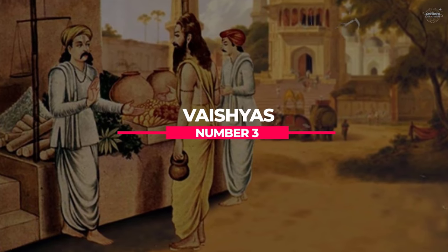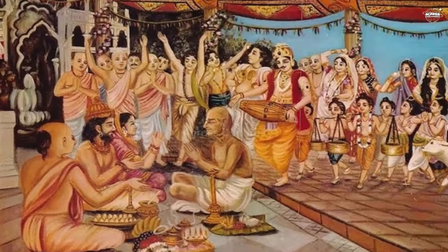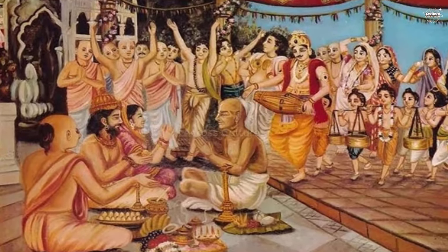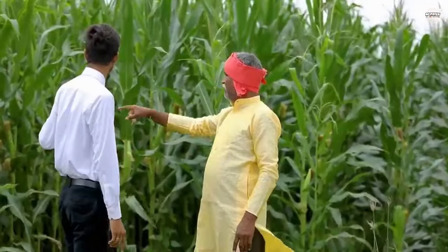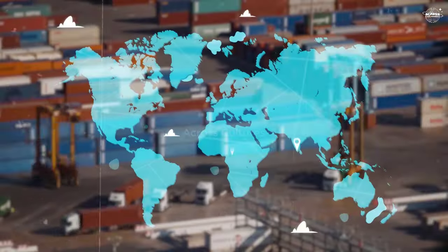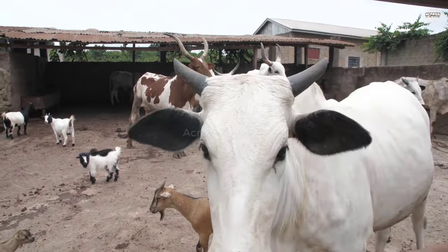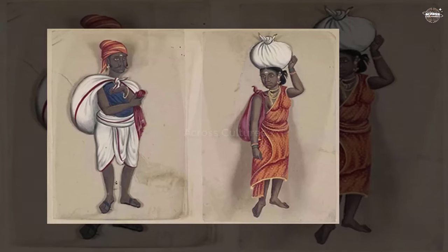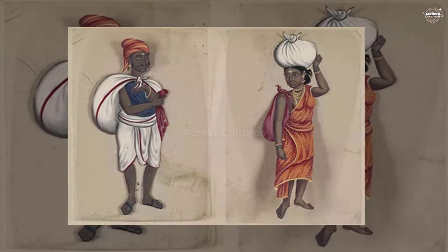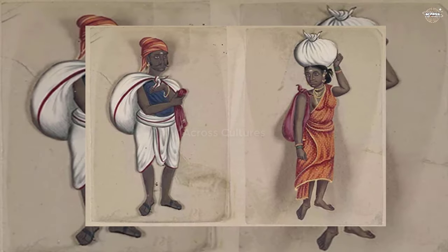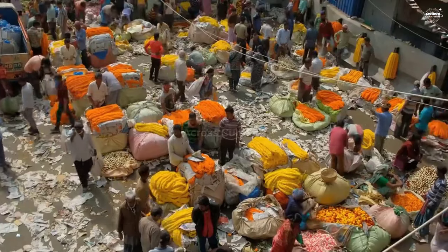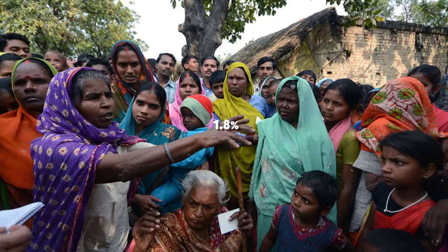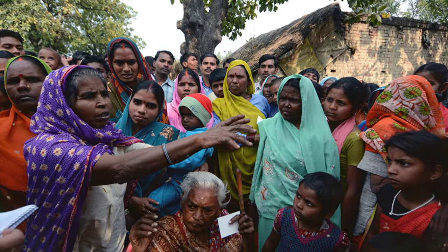Number 3: Vaishyas. At number 3, we have Vaishyas, created from the thighs of the Lord, and were the agriculturalists, merchants, traders, moneylenders, and those involved in commerce. Cattle-rearing was considered one of the key roles Vaishyas had to play. Some of them also used to work in close coordination with kings' administration to discuss and implement ways to raise the standard of living. Today, almost 1.8% of the Indian population are Vaishyas.